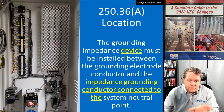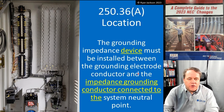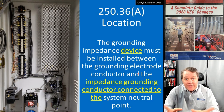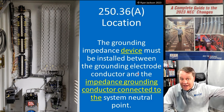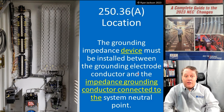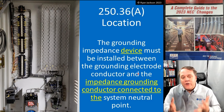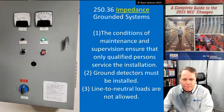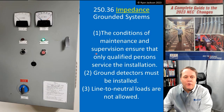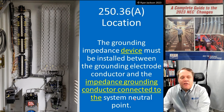Section 250.36(a) says the grounding impedance device - the actual impedance - must be installed between the grounding electrode conductor and the impedance grounding conductor that's connected to the system neutral point. That wire didn't used to have a name - we used to call it a neutral before 2008. That's when I got in touch with Chuck and said we have to fix this. Then Eric came along and said, 'Let's call it the impedance grounding conductor.' So this conductor is the impedance grounding conductor.